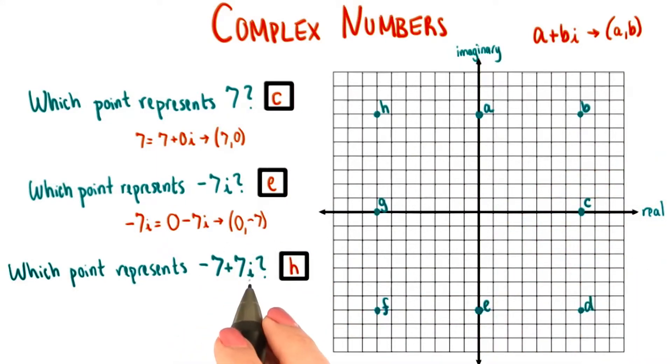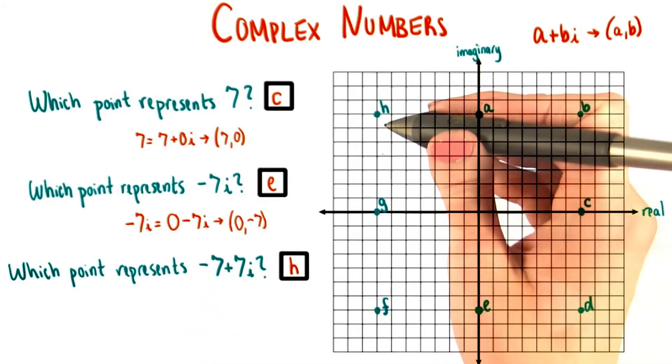Now, negative 7 plus 7i is already written in a plus bi form, or it's already recognizably written that way. So its coordinates are negative 7 comma 7, which is point h.